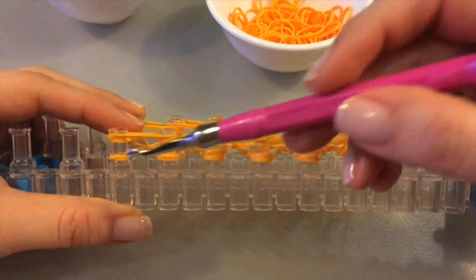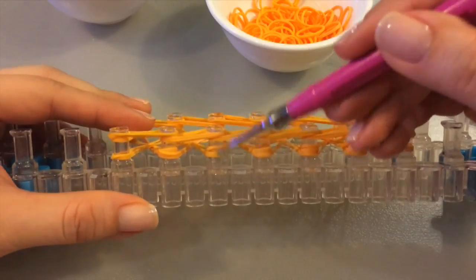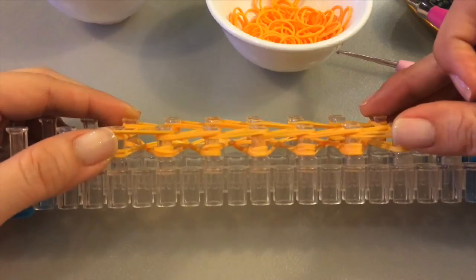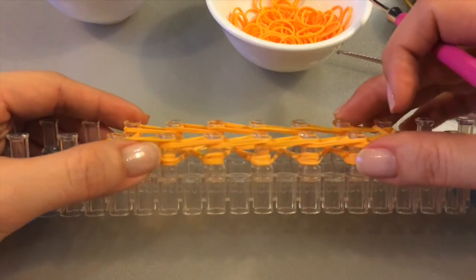Then you just need to lift all the lower bands, hook them up and over each peg. The outer bands would have two bands, while every other peg should have four.